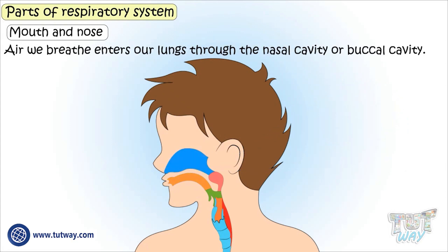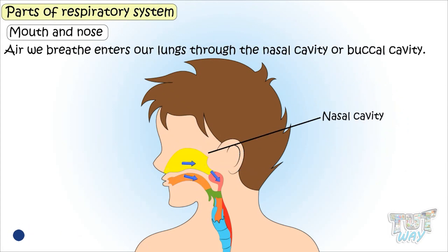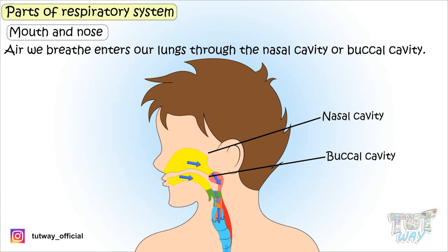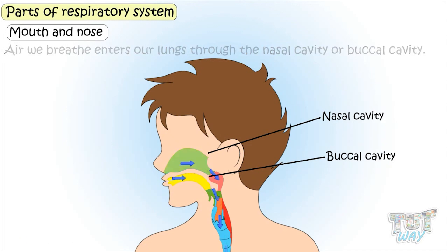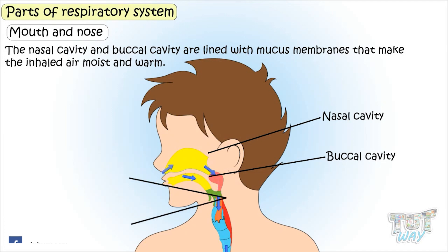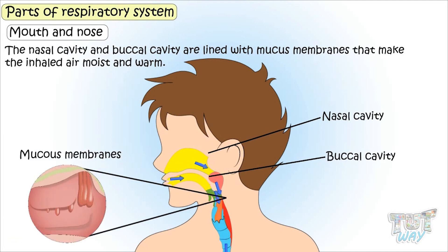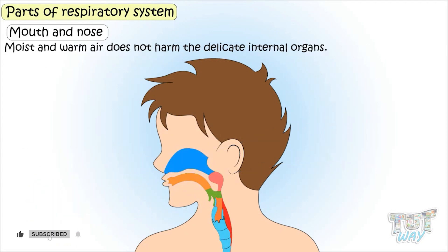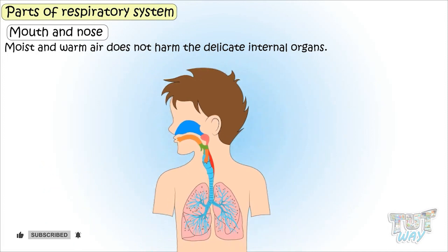Air we breathe enters our lungs through the nasal cavity or buccal cavity. Both the nasal cavity and the buccal cavity are lined with mucous membranes that make the inhaled air moist and warm. Warm and moist air does not harm the delicate internal organs.